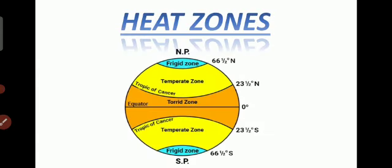Next are heat zones. As we move away from the equator towards the poles, the climate changes from hot to warm, warm to cool, and cool to cold in both hemispheres. This is due to the rays of the sun becoming increasingly slanting, and therefore heating becomes less. On the basis of distance from the equator, the earth is divided into three heat zones. The first is the torrid zone.